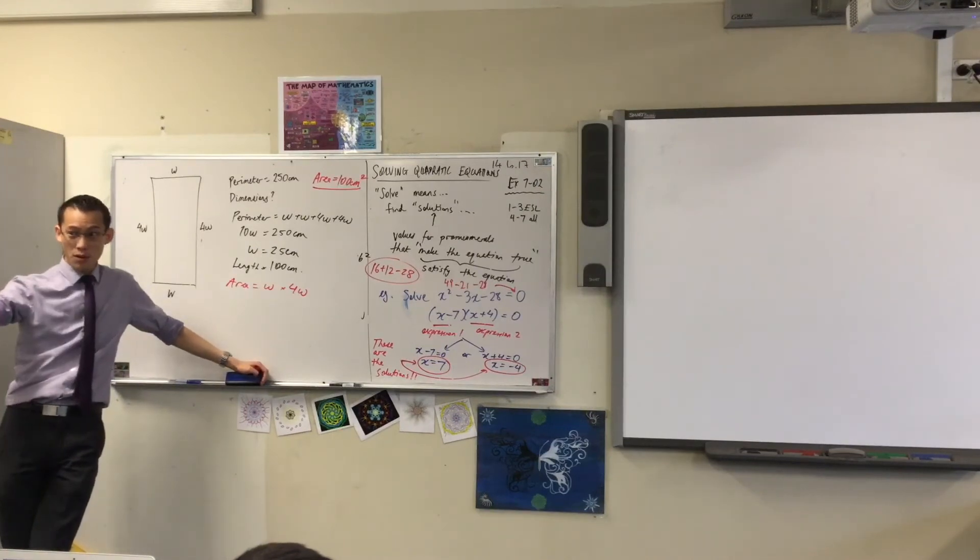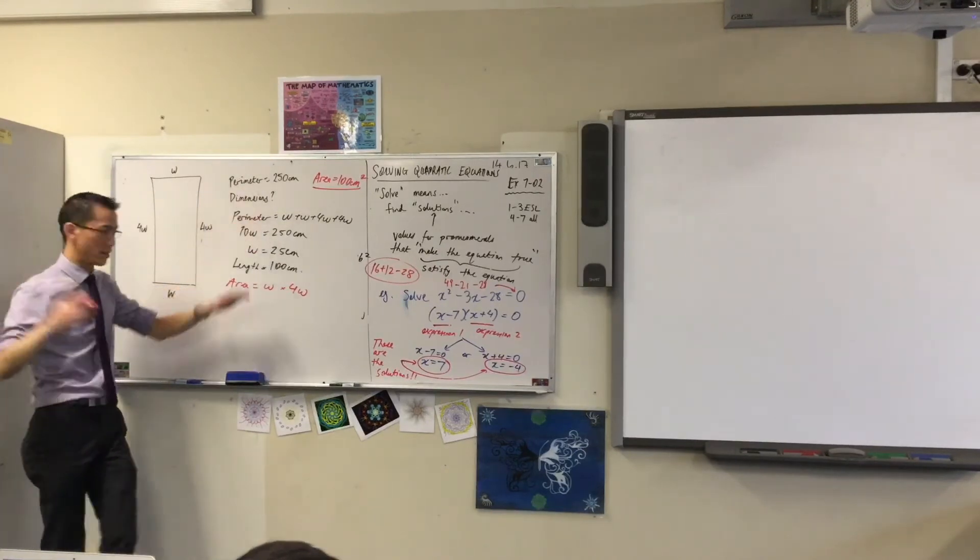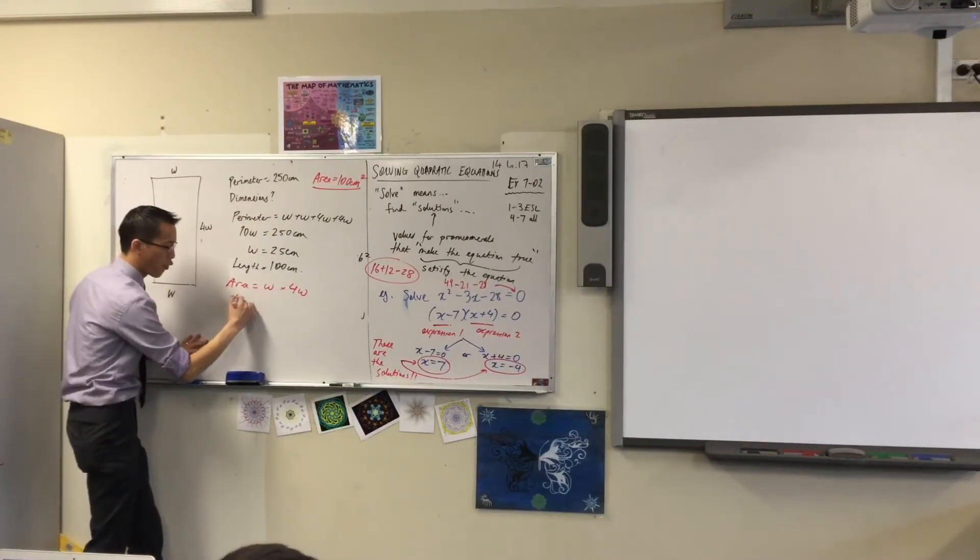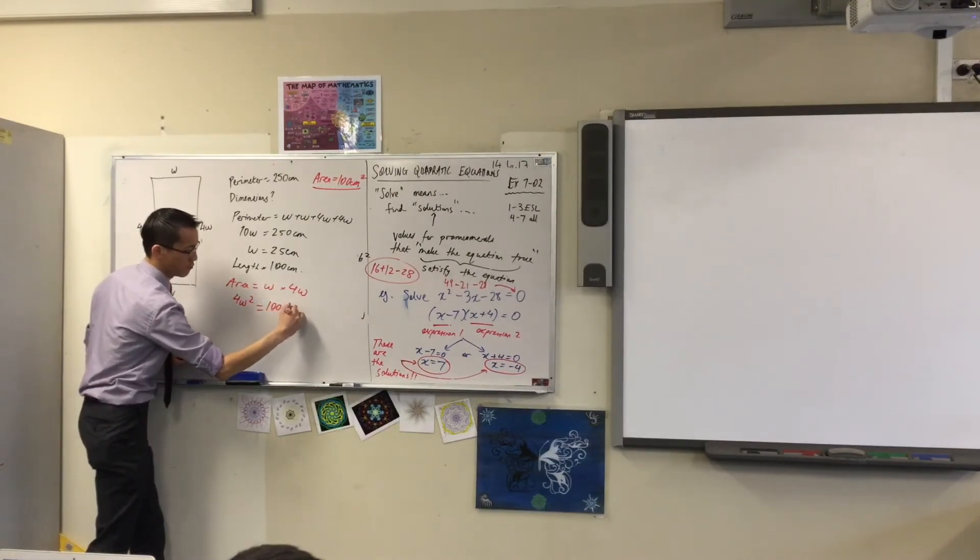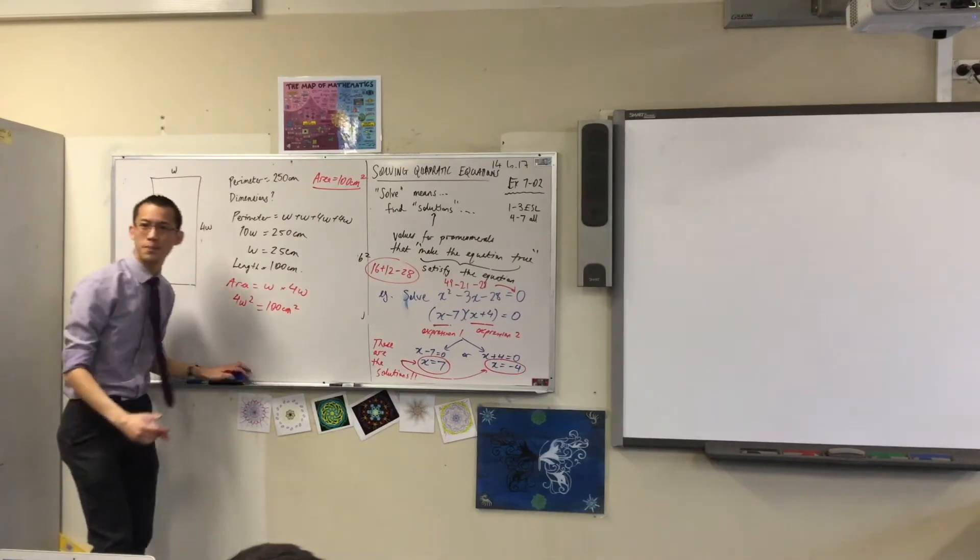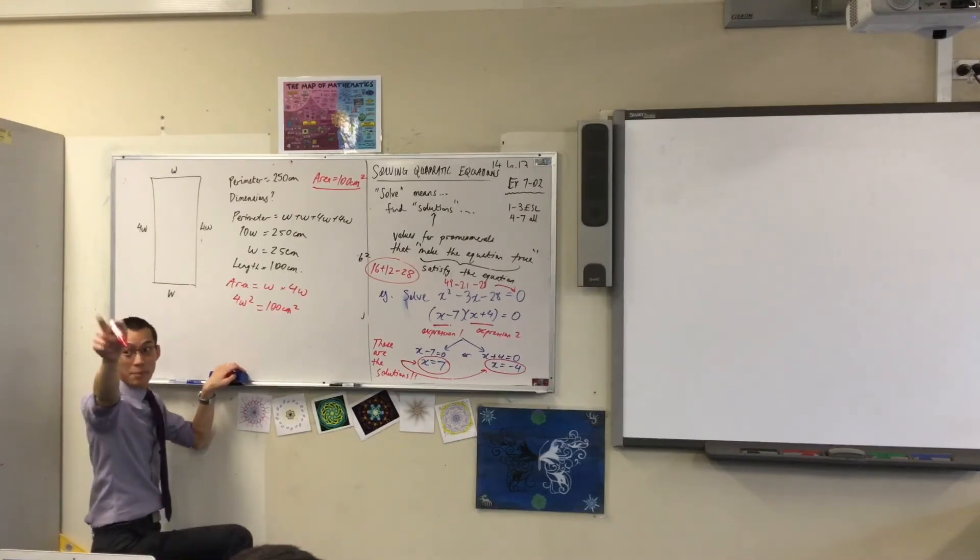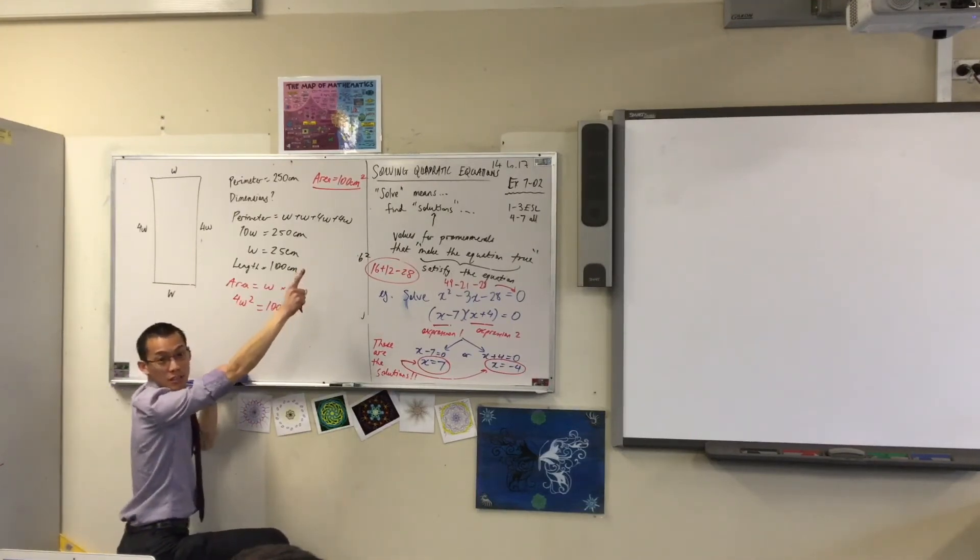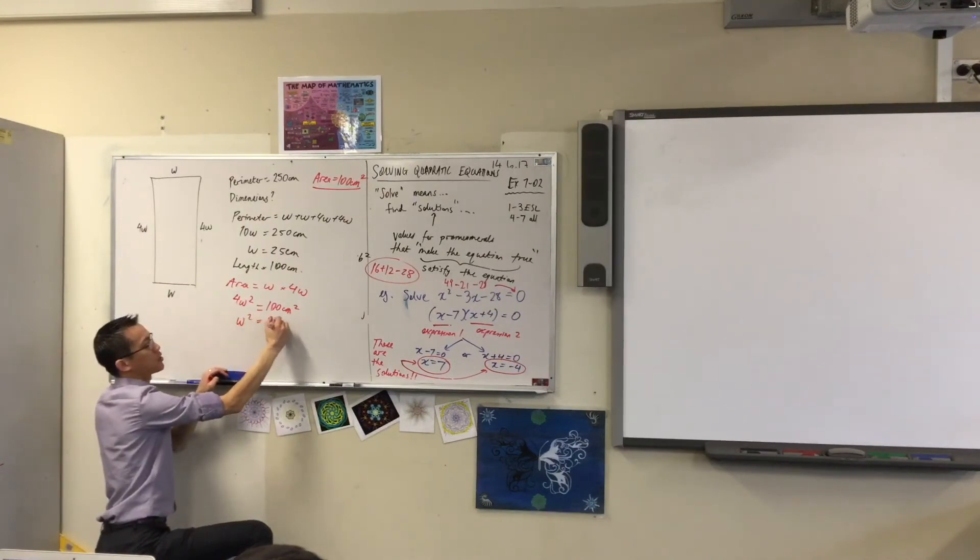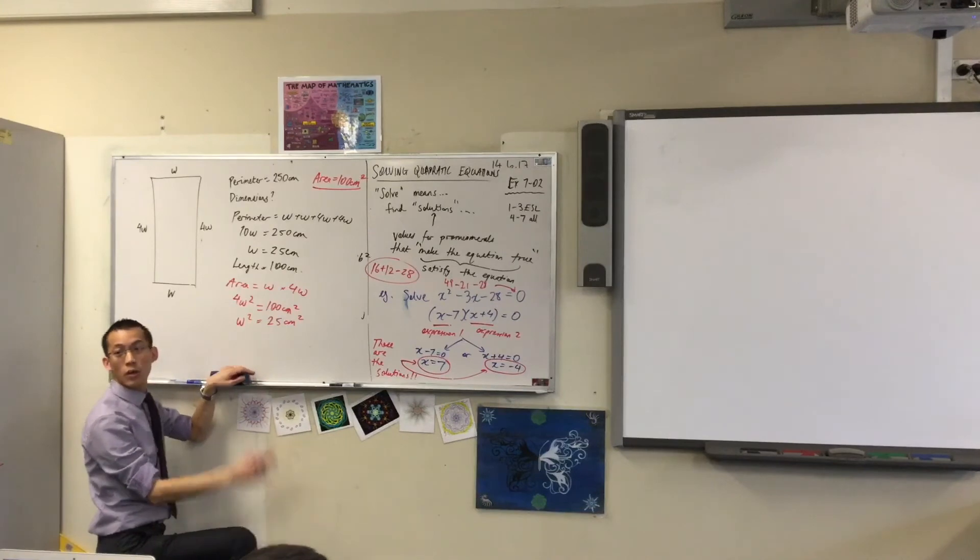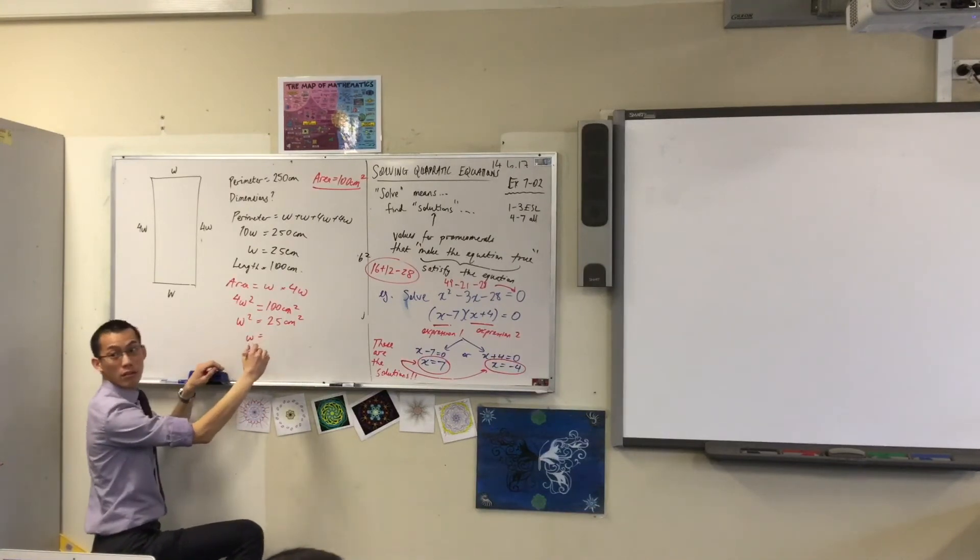But just like before, this is a known value, right? This is 100 square centimeters. So I can say 4W squared is 100 square centimeters. So now what can I do? I can divide both sides by 4. I'm trying to solve that equation. It's a quadratic equation too. I'll divide both sides by 4, which gives me W squared equals 25. So what's W now? 5. 5 what? 5 centimeters.